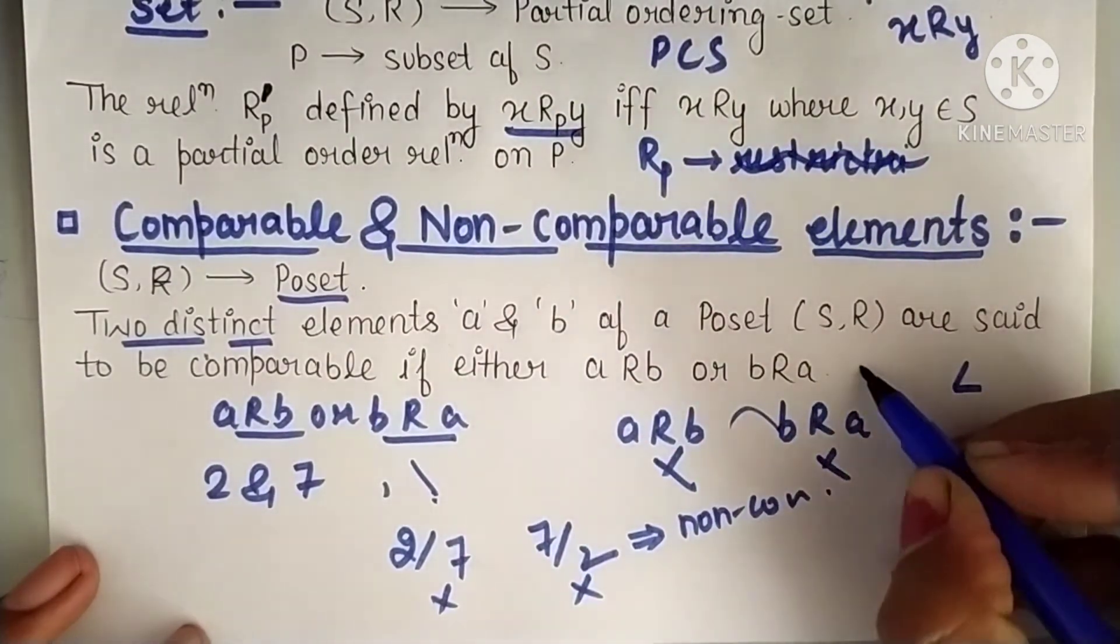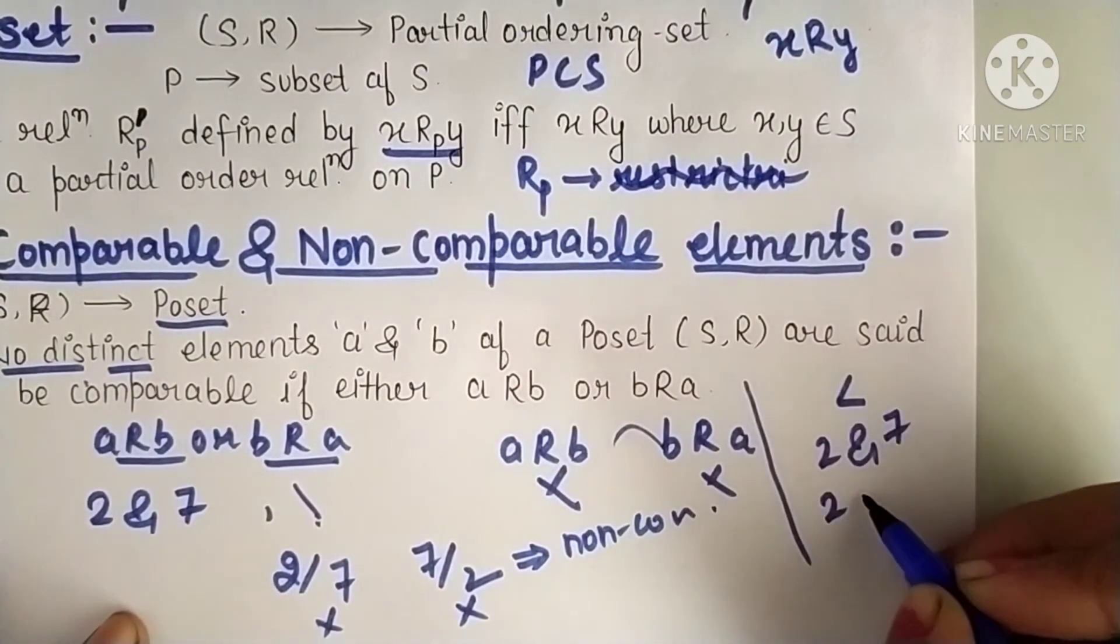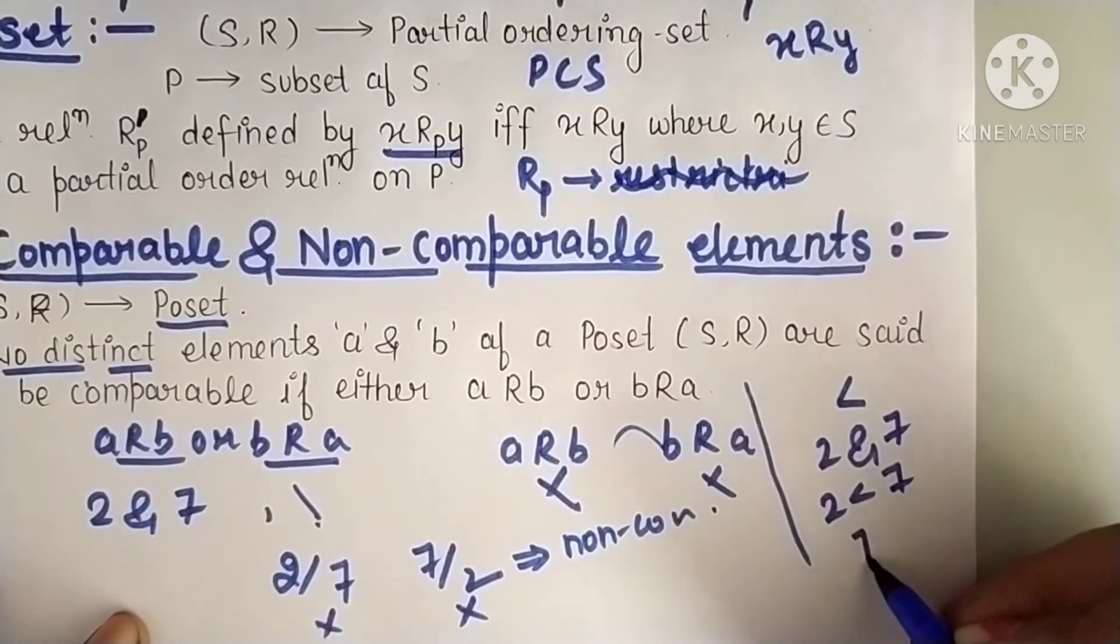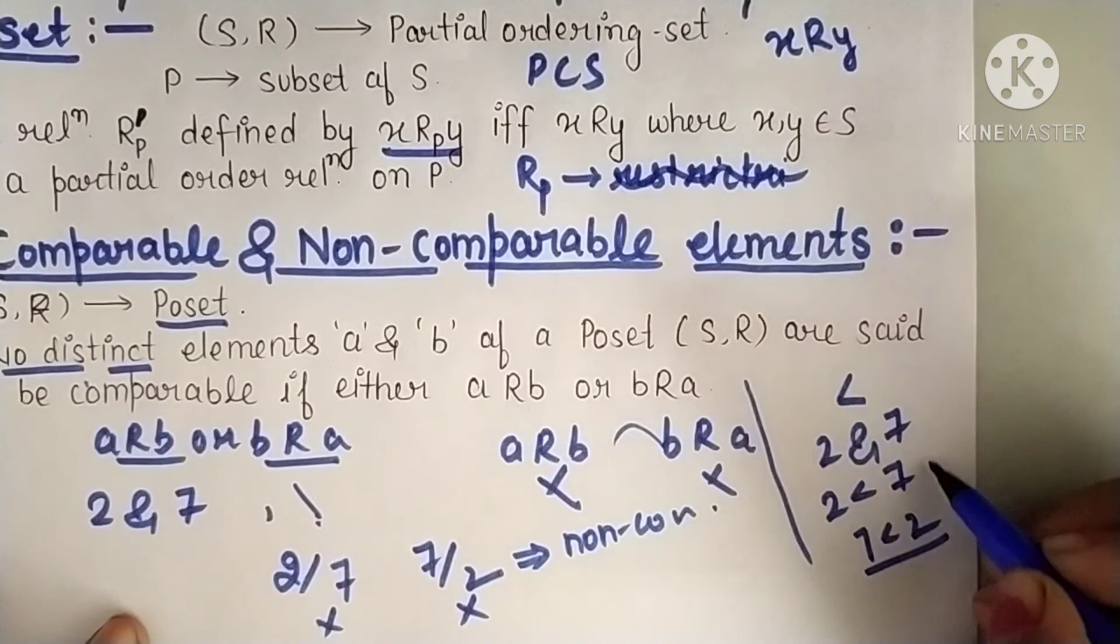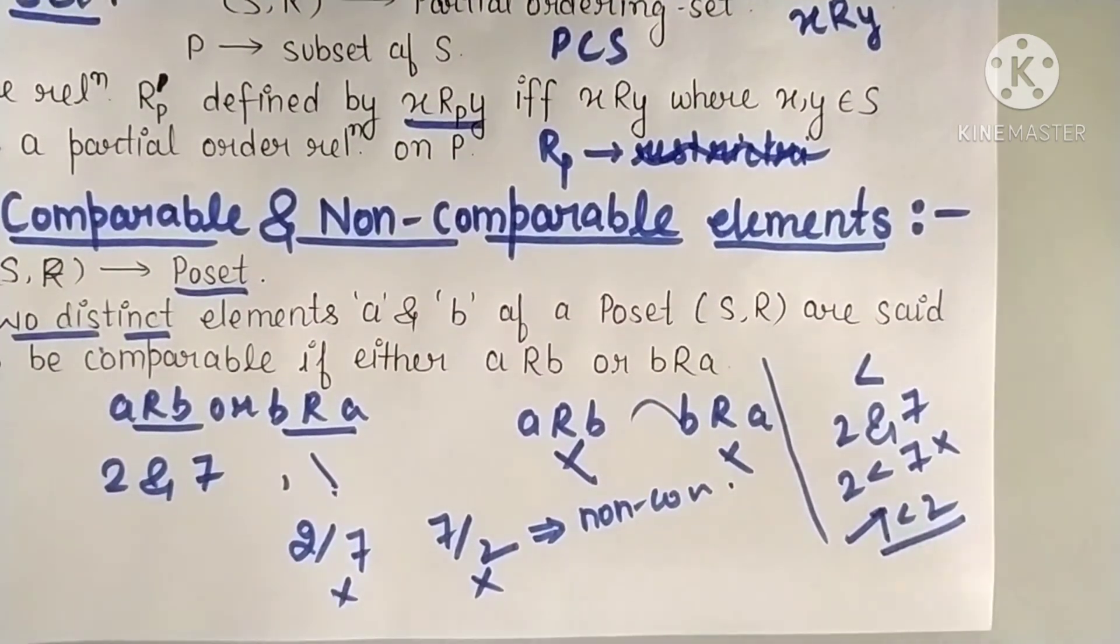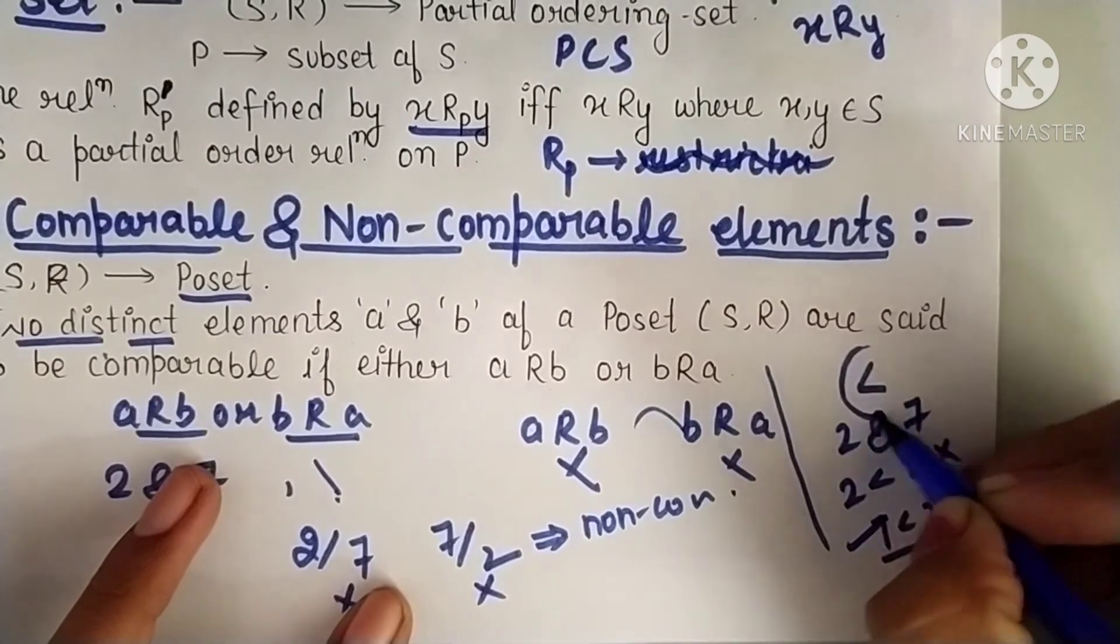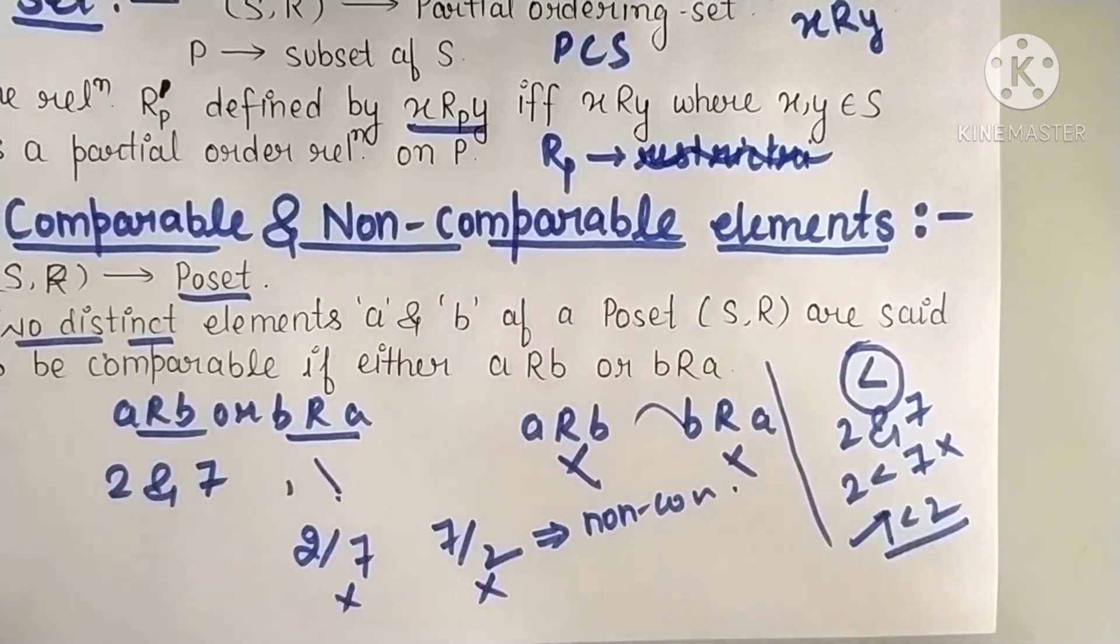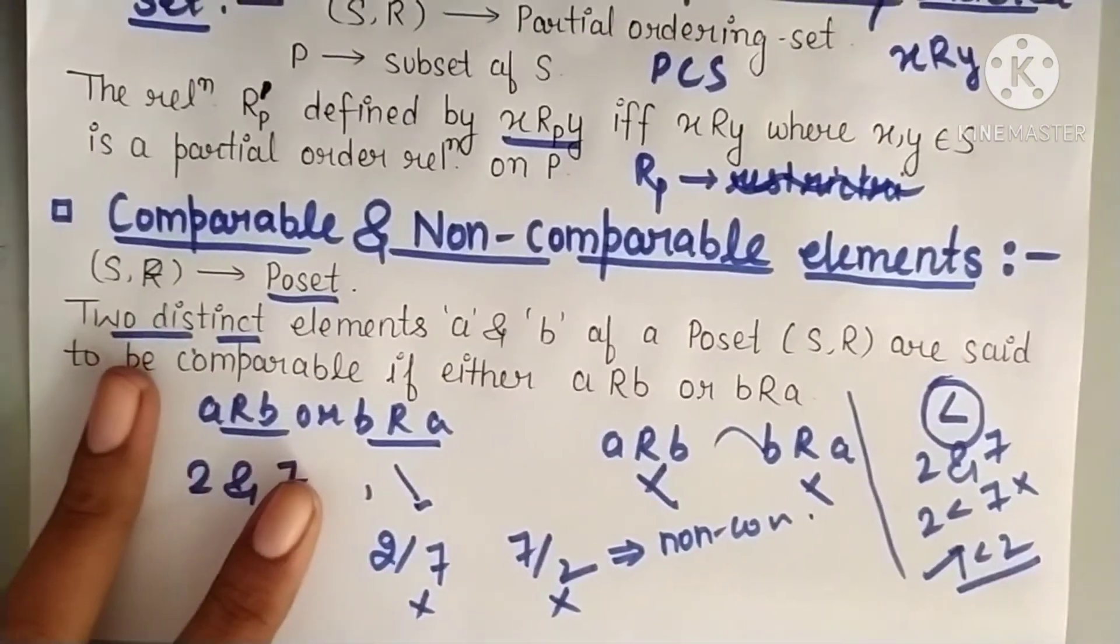But if I take the relation less than, if I consider the relation less than and take elements 2 and 7, then is 2 less than 7 or 7 less than 2? 2 less than 7 - one condition is satisfied. This doesn't hold, but one condition is satisfied. We said if even one condition is satisfied, then we say the elements are comparable. So 2 and 7 are comparable with respect to the relation less than, and non-comparable with respect to the relation divisibility. So that's all for today.